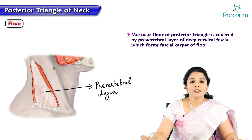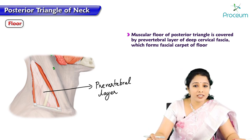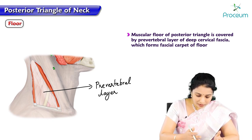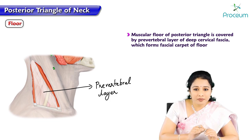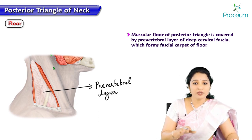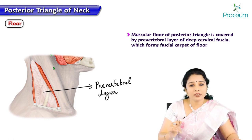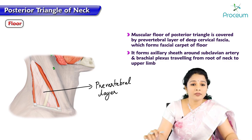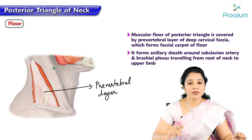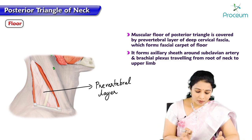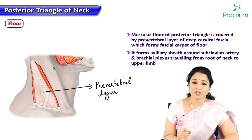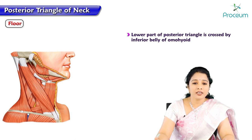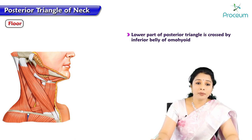The muscular floor is covered by the prevertebral layer of deep cervical fascia, which acts like a fascial carpet over the floor structures. This prevertebral layer forms a sheath — the axillary sheath — around the subclavian artery and brachial plexus, travelling from the root of the neck to the upper limb. The lower part of the posterior triangle is crossed by the inferior belly of omohyoid.